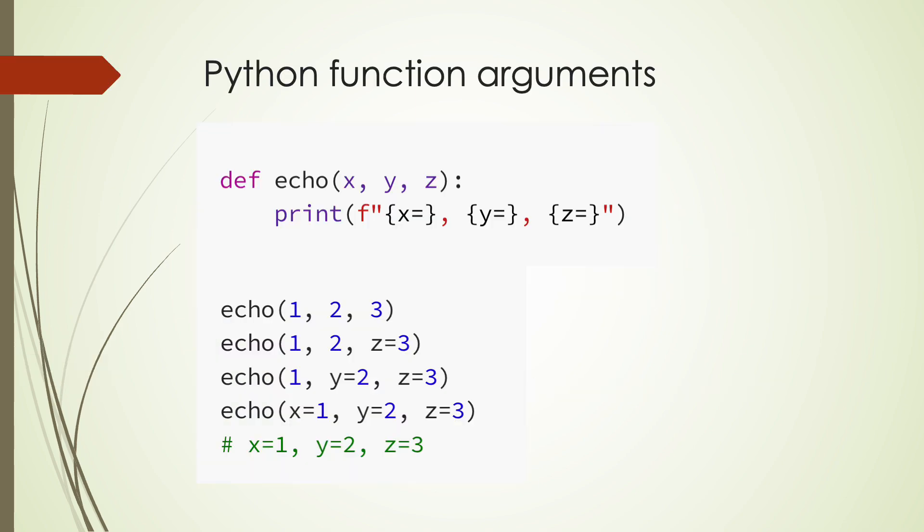By default, we can pass data to functions by positional or keyword arguments in Python, which makes functions very flexible to use. For example, we can call this simple echo function, which simply prints the input arguments,